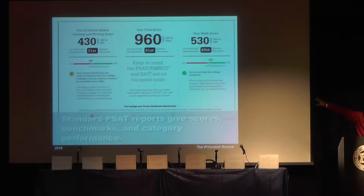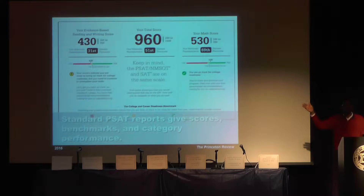Here are the things we care about on the PSAT score report. First thing you want to look at is the scores at the top — this is what colleges care about. In this example, we have a 430 and a 530, adding up to a 960. The highest possible PSAT score is 1520. And the percentiles are interesting because they tell you where your child stands relative to the rest of the country. This child was in the 51st percentile compared to their grade. This looks like a 10th grade report — for a sophomore, a 960 would be the 51st percentile.